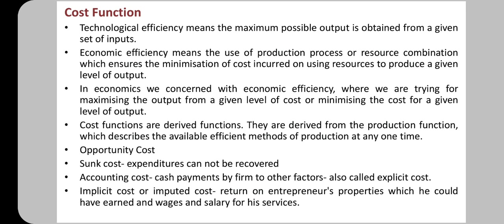We are also looking at the other factors. As a producer, the factors are land, labor, capital, and organization — these are the four factors of production. For example, laborers are looking to their payment. So we are accounting for cost: cash payment and accounting cost are considered. Then there are implicit cost and explicit cost.